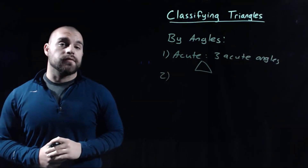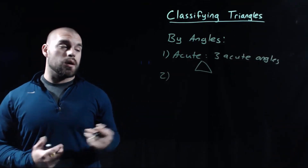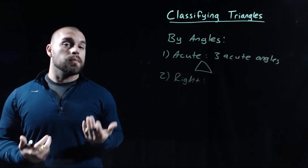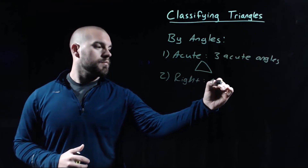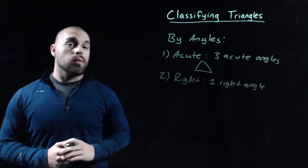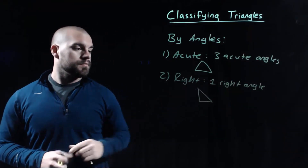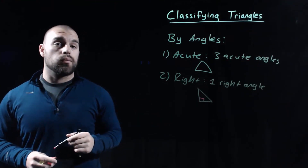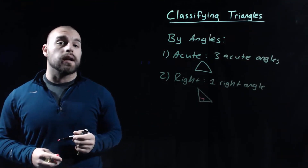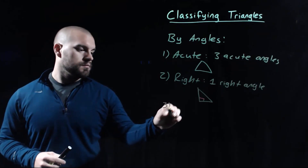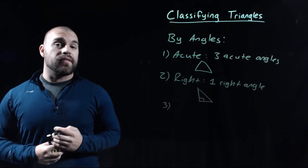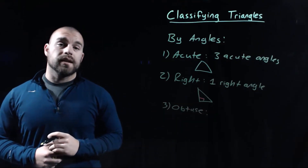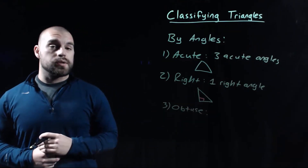The second kind is a right triangle. In a right triangle there is one right angle, and when we draw it we have to put a box in the corner to show it is a 90 degree angle. The next kind is an obtuse triangle, and in an obtuse triangle there is one obtuse angle.